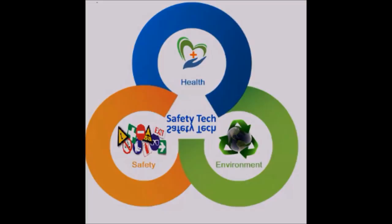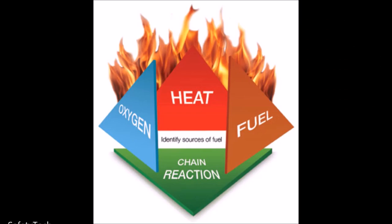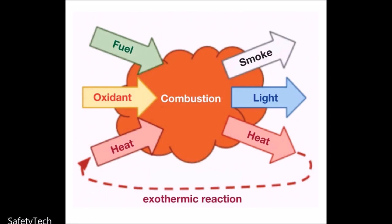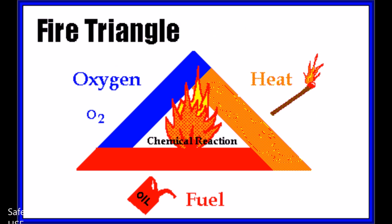Hi everybody. In this lesson we are learning fire science — that is the physics of combustion. According to NFPA 921, fire is defined as a rapid oxidation process, which is a chemical reaction resulting in the evolution of light and heat in varying intensities. Fire is also defined as an uncontrolled combustion. The easiest definition of fire is the chemical reaction between oxygen, burning material and the presence of heat.